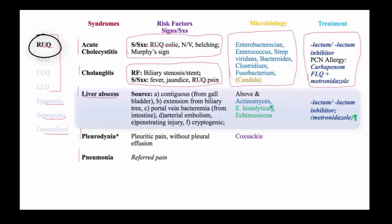Liver abscesses develop in many different ways. They can extend contiguously from the gallbladder or from the biliary tree. They also may develop from portal vein circulation with a proximal intra-abdominal infection, such as appendicitis or diverticulitis, where bacteria are filtered through the portal vein into the liver and set up an abscess. Rarely, they can seed directly from the arterial bloodstream, associated with specific pathogens such as Streptococcus and occasionally Staph aureus.